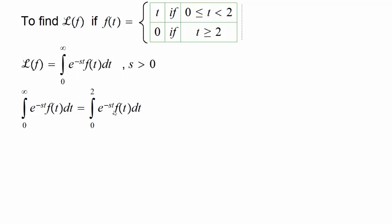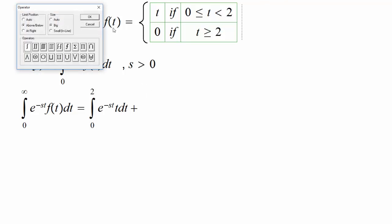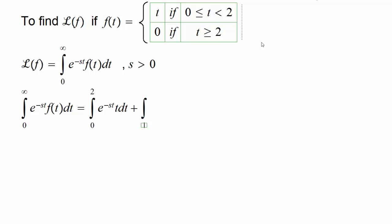So first one would be 0 to 2, and then we have this part, and that part is how much? T, right? And then we go from 2 to infinity, the upper limit of this improper integral, and then e to the negative st times 0, and then we are integrating that.